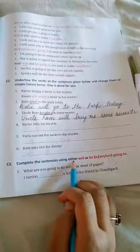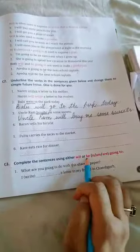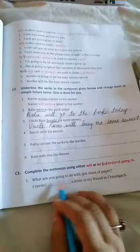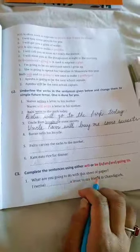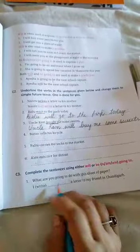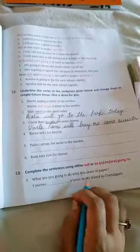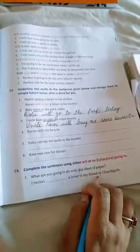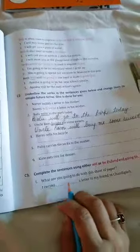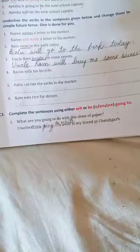See C3: Complete the sentences using either will or be - is, am, are - going to. First one: What are you going to do with this sheet of paper? I am going to write a letter to my friend in Chandigarh. What is this? This is a kind of plan. What will we use? I am going to write a letter - yes, I am going to write a letter to my friend in Chandigarh.